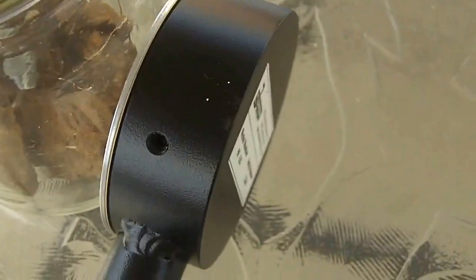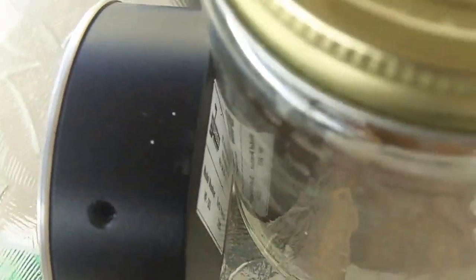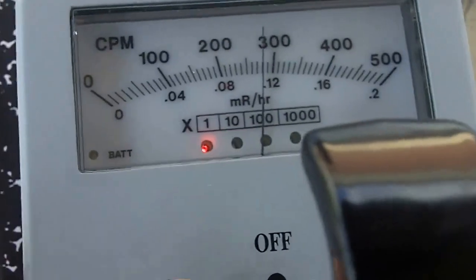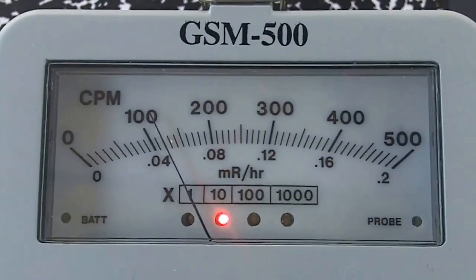Let's measure gamma rays with the back of the pancake probe. Let's go with the back only. Let's do a reset. And there we go. Gamma rays only.